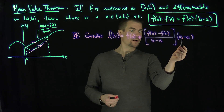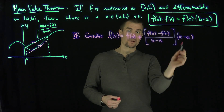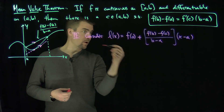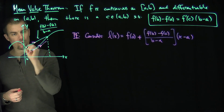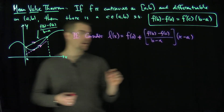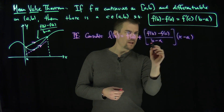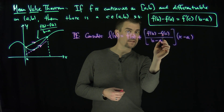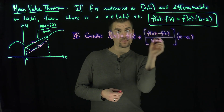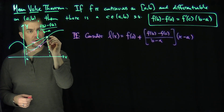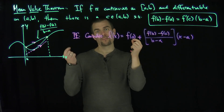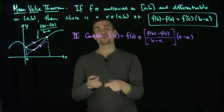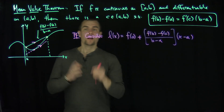When I plug in x equals a, this term is going to be zero, so it will be f of a. So this line goes through the point a, f of a. And when I plug in b, the b minus a will cancel, and I'll have f of a plus f of b minus f of a, so f of a cancels and we get f of b. So I've found two points that are actually on the secant line, and since it's a line, it has to agree with the secant line.